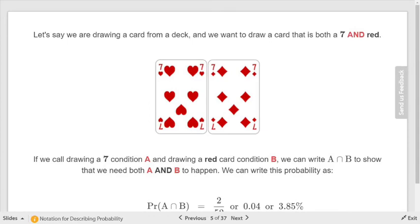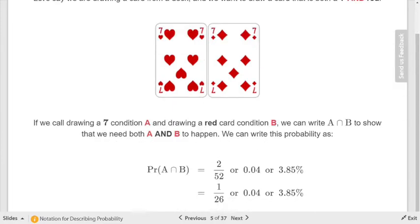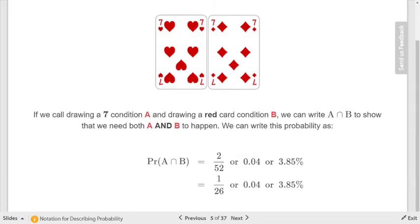They're going to do an example. Let's say we're drawing a card from a deck and we want a card that's both seven and red. Since it's not naming a suit, it's just naming a color, there are two sevens that are also red: the seven of hearts and the seven of diamonds. So there are two cards out of 52. Since it's an and statement, you see how they've written the probability here. The probability of A intersect B is two out of 52, which they have also changed into a decimal and a percent.